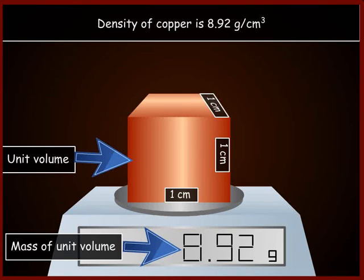This means density of copper is 8.92 g per cubic centimeter.